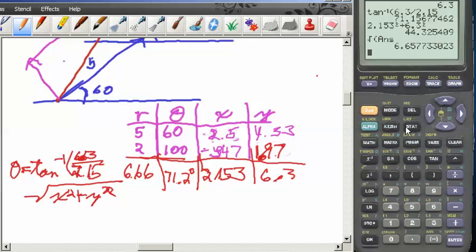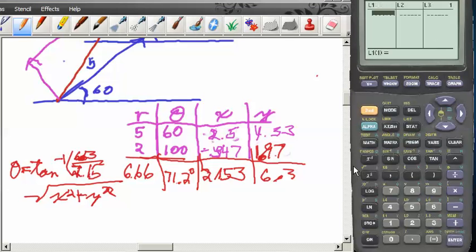Now take advantage of some capabilities of this calculator. I'm going to go into stat edit. I'm going to enter these numbers five and two into list one, and then I'm going to enter the numbers sixty and one hundred into list two. Into list three I'm going to go up there to where the list is and say l one times the cosine of l two.